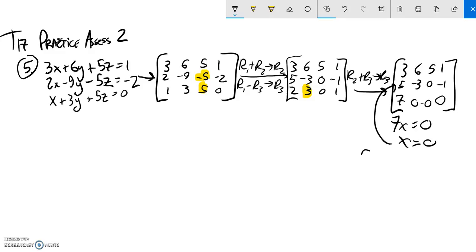So I can plug it back into here then. 5 times x, which is 0, minus 3 times y equals negative 1. So negative 3y equals negative 1. Sorry, divide by negative 3. And y is positive 1 third.